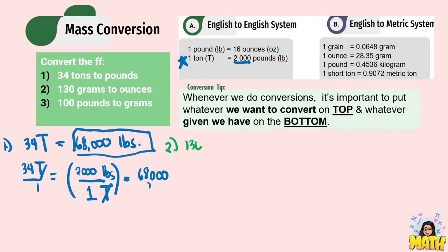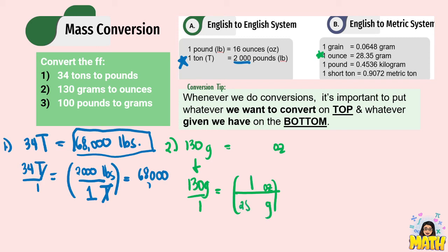Number 2: convert 130 grams to ounces. Using the English to metric conversion where 1 ounce equals 28.35 grams: 130 times 1 divided by 28.35 gives 4.59 ounces. This is the final answer for number 2.